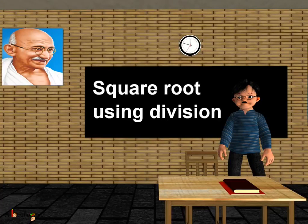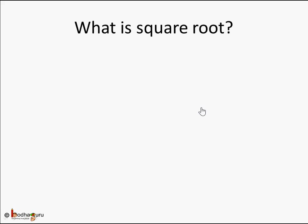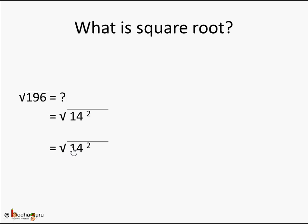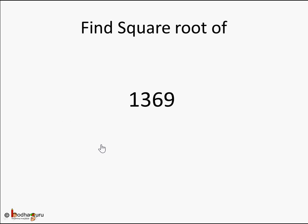Hello children. In this video we are going to learn how to find the square root of a number using the division method. Let's revise what a square root is. Square root of any given number is the inverse of the square operation. For example, the square root of 196 is 14, because 14 squared is 196.